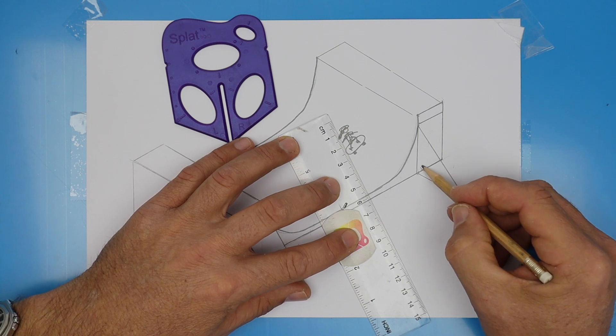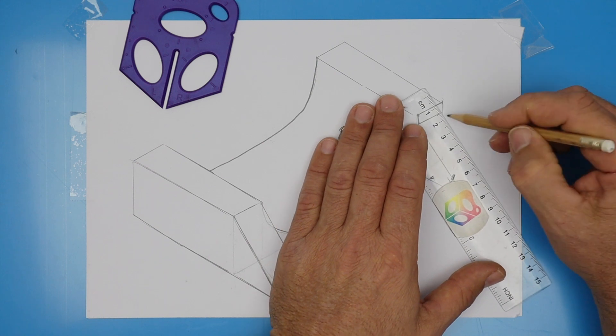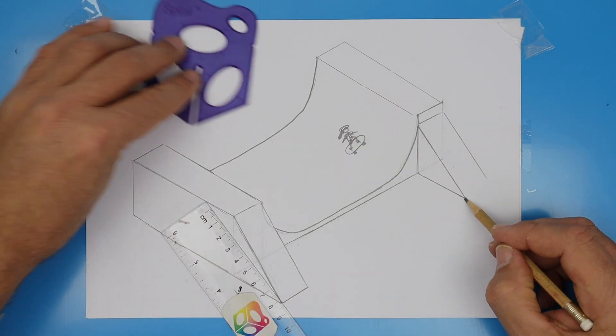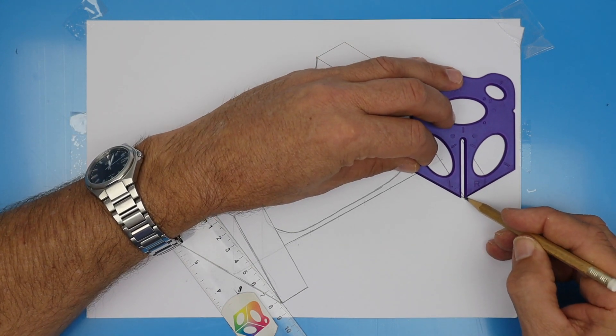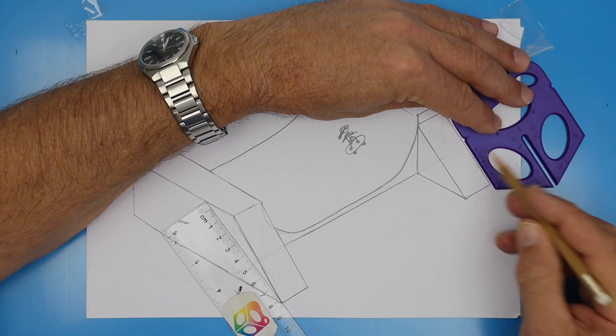I'd erase that line there and then draw a parallel line that starts from that point. And then to find the end, line up your splat and draw a right splat line. Oh, looks like that one wasn't quite long enough, so let's fix that up. Great.